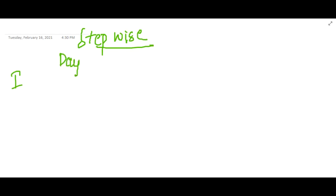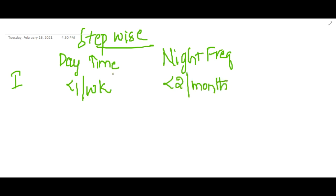First step is based on two things: daytime frequency of asthma and nighttime frequency of the asthma. If the daytime frequency of asthma is less than one per week and if the nighttime frequency is less than two per month, then it is called as first step where you give only short-acting bronchial agonists as and when needed.